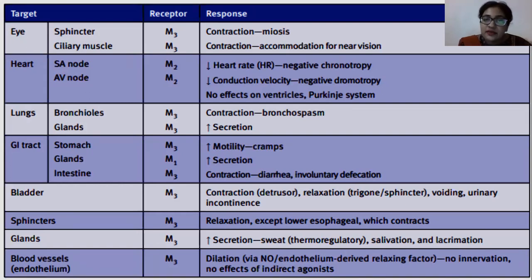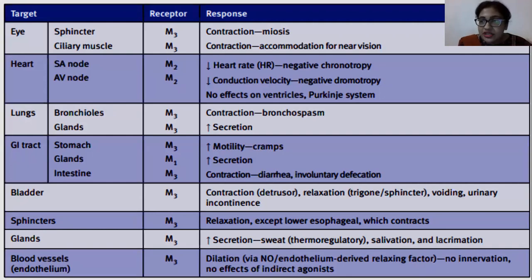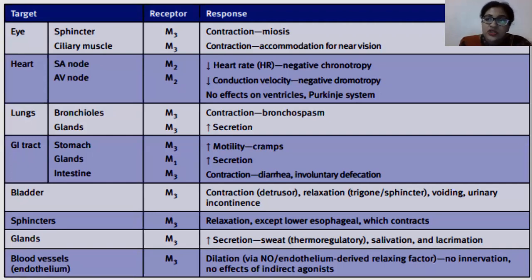Regarding glands and mucus: muscarinic causes excessive secretion, so anti-muscarinic would cause a very dry throat due to less mucus secretion. This can be beneficial if someone's body is hyperactive and producing a lot of acetylcholine, but if there's no underlying condition and you take it, you will face many adverse effects.